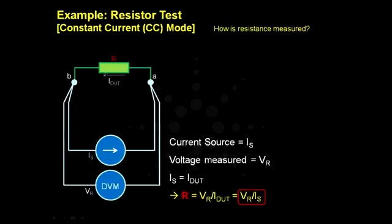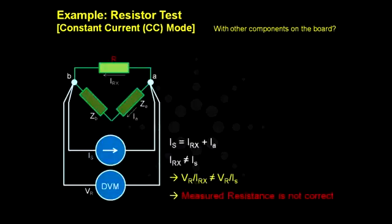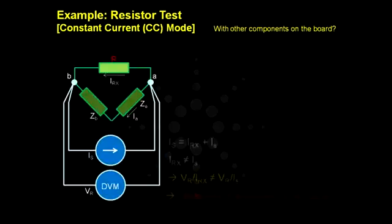Considering other components on the board, they form a resulting parallel impedance as represented by Z-A and Z-B in the diagram. Similarly, as in the case of constant voltage source, there is a leakage I-A from the source current into the parallel path. So I-S is not equal to I-RX. So the measured resistance is not the same as the actual resistor.